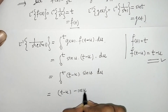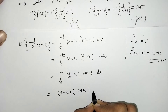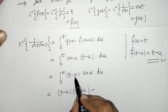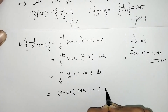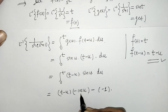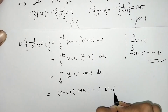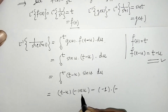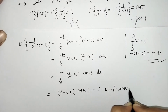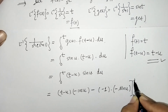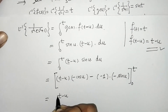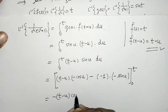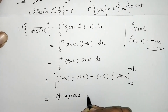Applying integration by parts: (t - u) times the integral of sin(u) gives (t - u)·(-cos(u)). Then minus the derivative of (t - u), which is -1, times the integral of cos(u), giving -sin(u). There are three minus signs overall. This is evaluated within limits 0 to t.